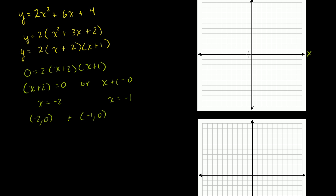Let me graph it. Negative 2 comma 0 is right there. Let me do this graph a little bigger, labeling in double steps — so negative 1, negative 2, negative 3. The point negative 2 comma 0 is on our graph, and then we have negative 1 comma 0 right there.